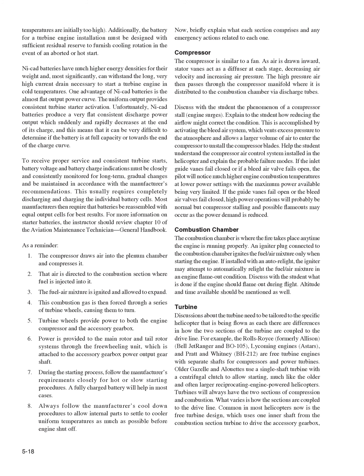For more information on starter batteries, the instructor should review Chapter 10 of the Aviation Maintenance Technician General Handbook. As a reminder, the turbine engine cycle: 1. The compressor draws air into the plenum chamber and compresses it. 2. That air is directed to the combustion section where fuel is injected into it. 3. The fuel-air mixture is ignited and allowed to expand. 4. This combustion gas is then forced through a series of turbine wheels, causing them to turn. 5. Turbine wheels provide power to both the engine compressor and the accessory gearbox. 6. Power is provided to the main rotor and tail rotor systems through the freewheeling unit. 7. During the starting process, follow the manufacturer's requirements closely for hot or slow starting procedures. 8. Always follow the manufacturer's cool-down procedures to allow internal parts to settle to cooler uniform temperatures before engines shut off.